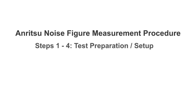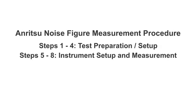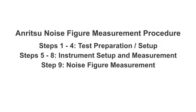The Anritsu noise figure measurement procedure consists of nine steps. Steps one through four are for test preparation and setup. Steps five through eight are instrument setup and measurement configuration. And step nine is the actual measurement.